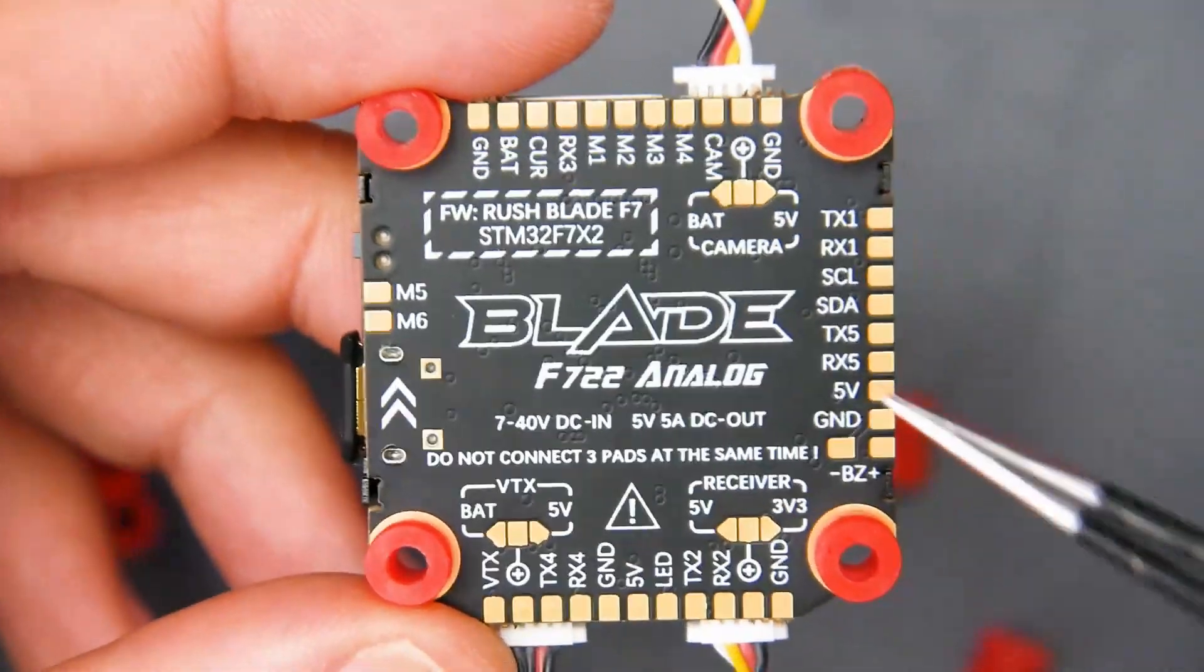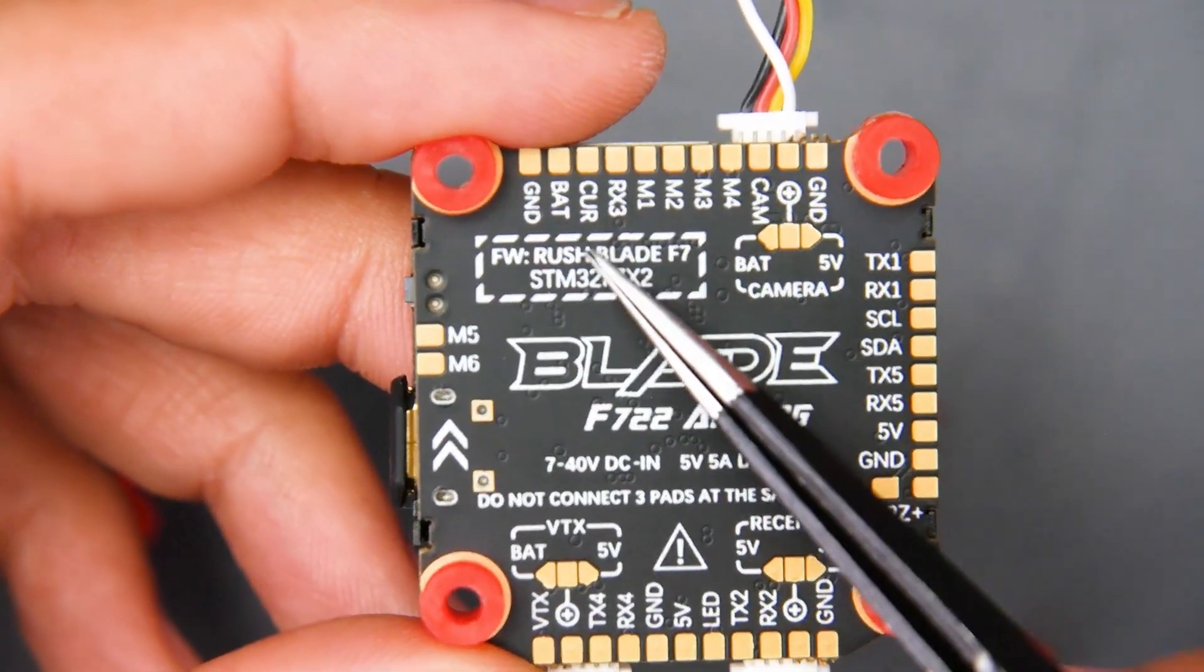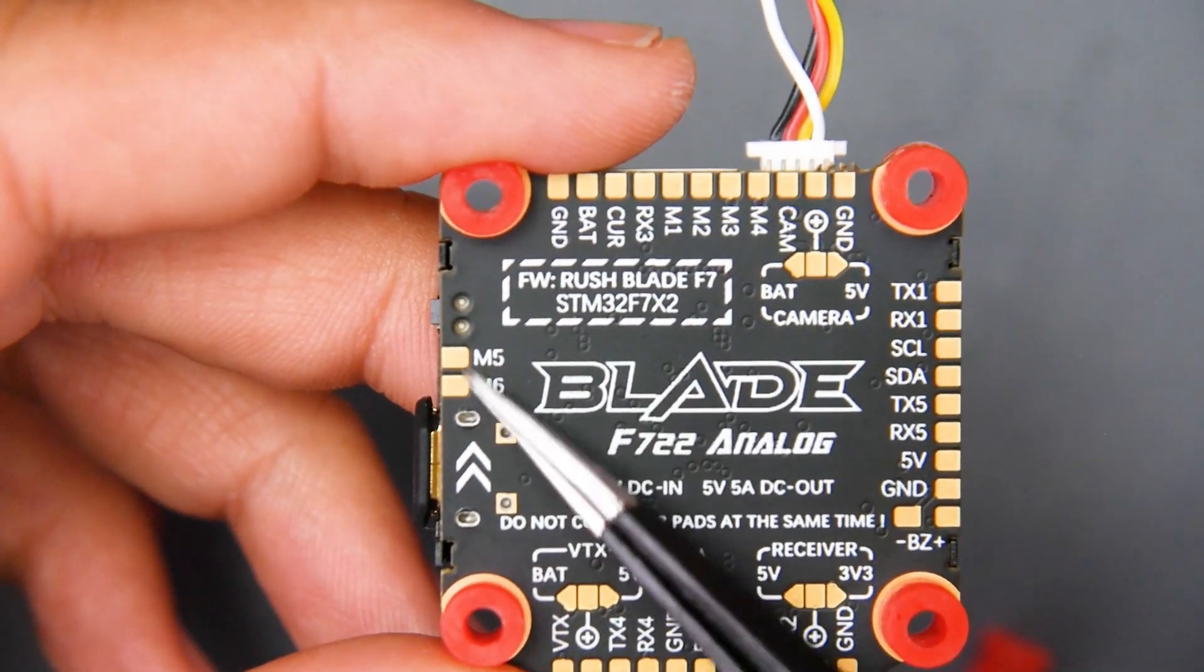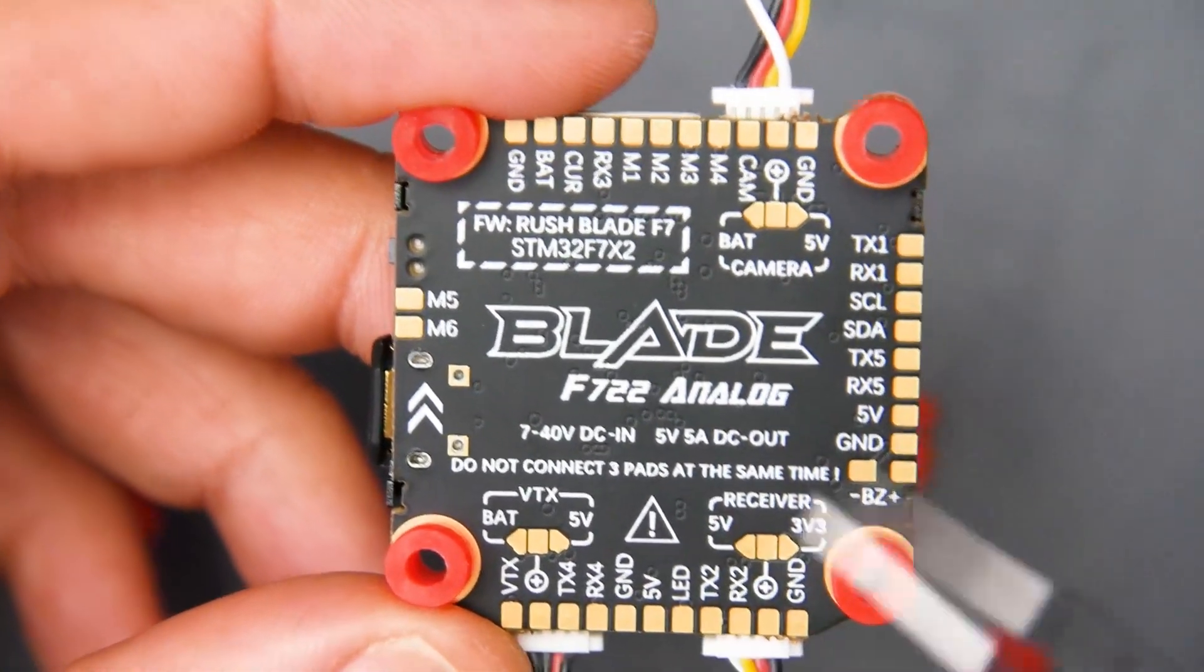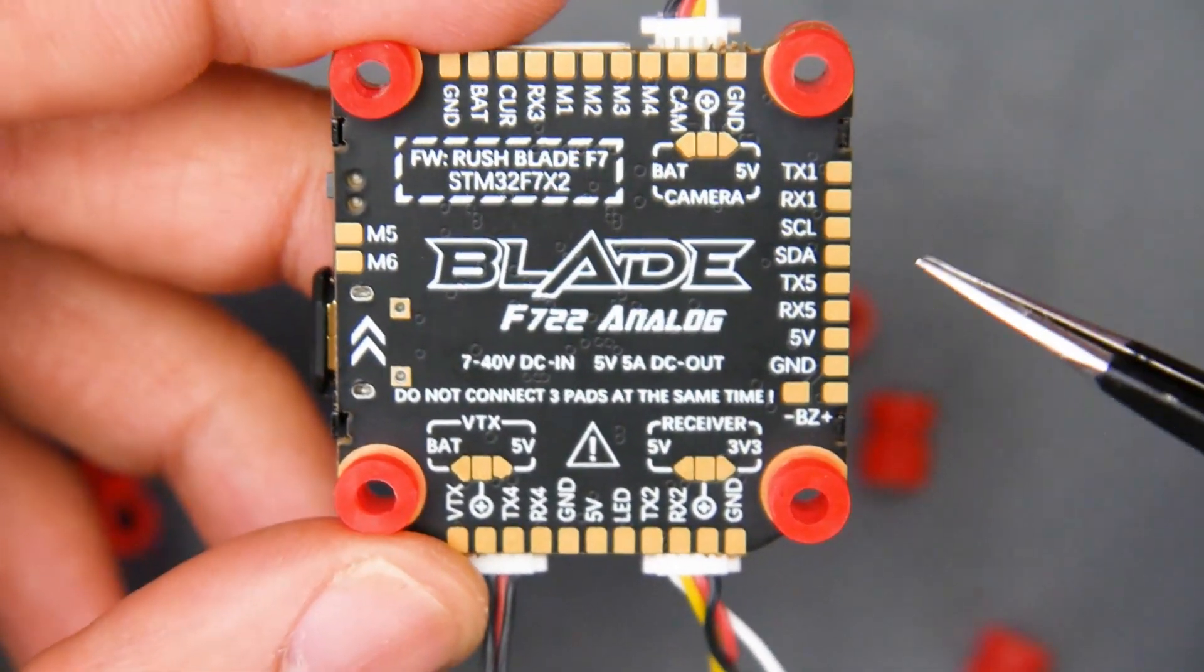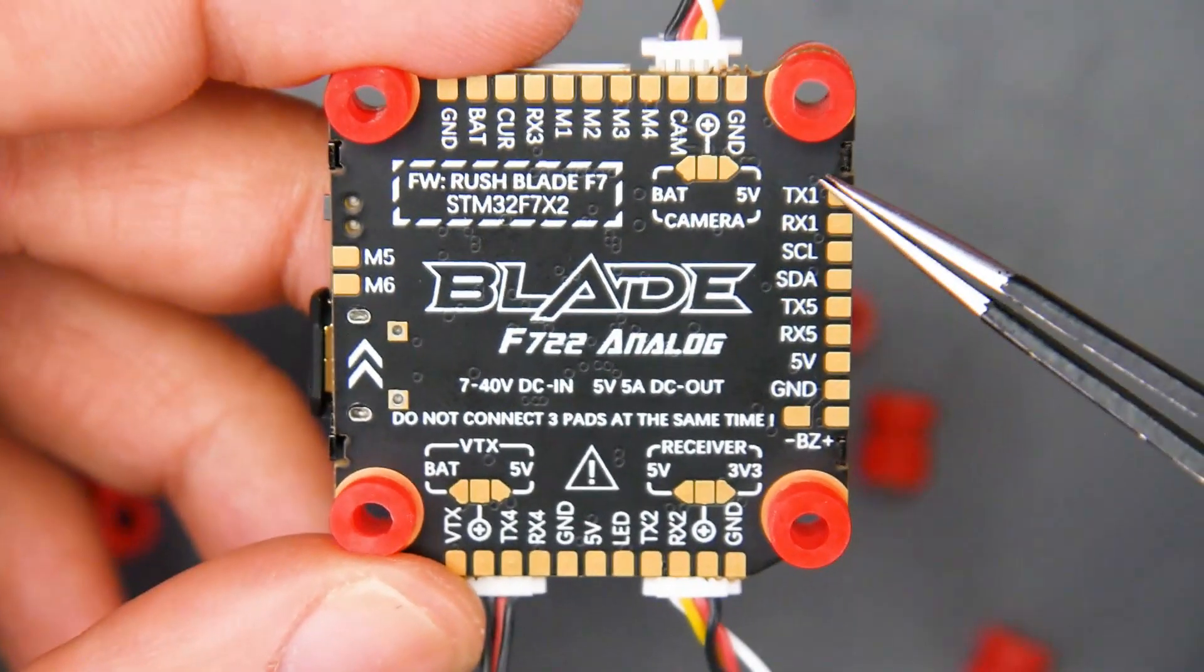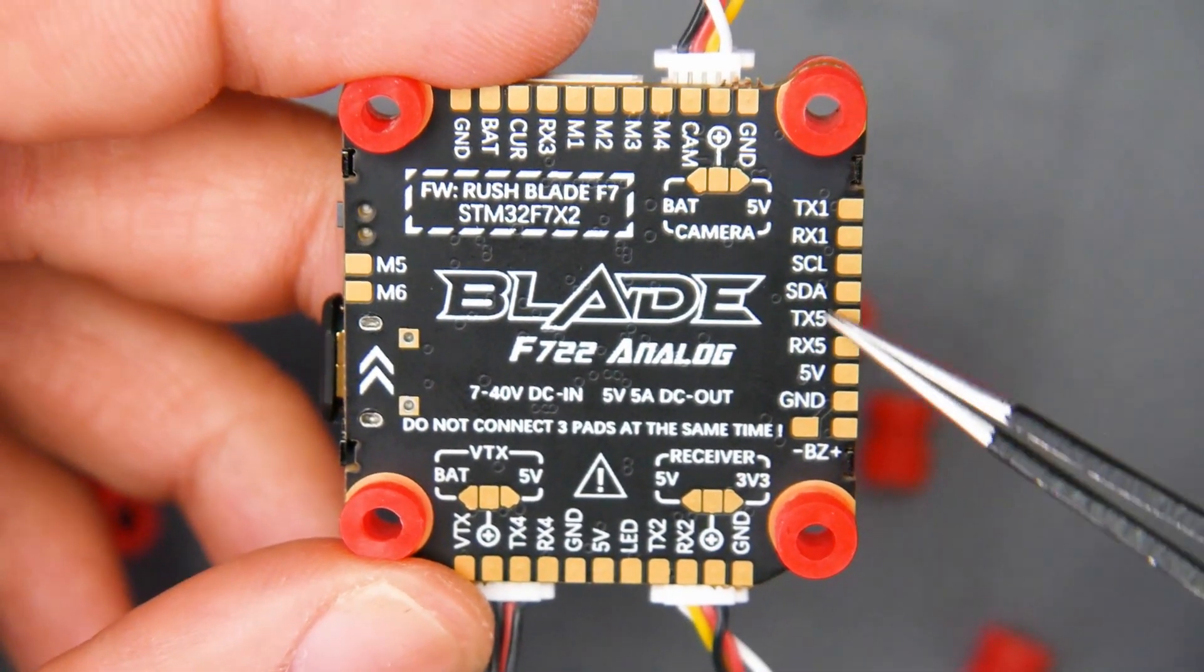Now, and again, like I mentioned before, everything is broken out on the bottom. We have the motor outputs. We have the current. We even have ESC telemetry on RX3. We have six motor outputs. So if you want to build the hex, which is probably going to be a new trend for a bit here. This side here, it's kind of meant for a GPS kind of setup, but you could use this for whatever you want.